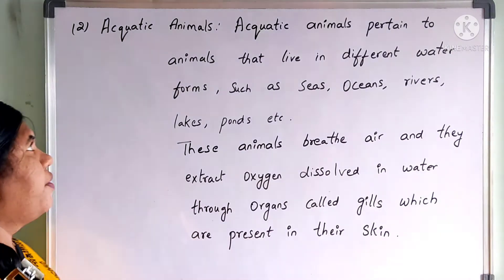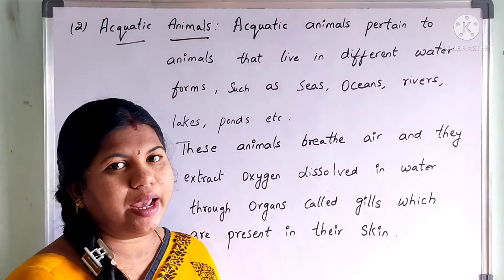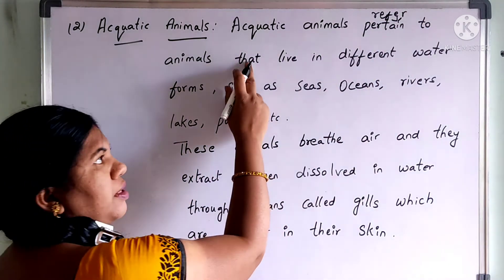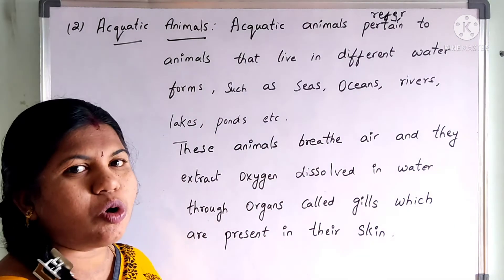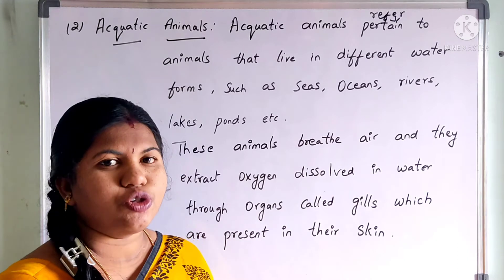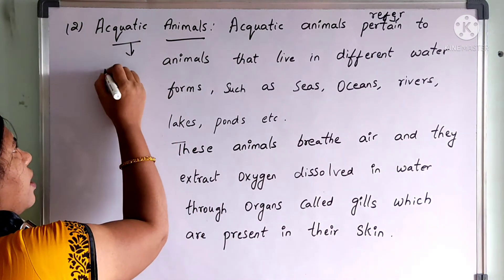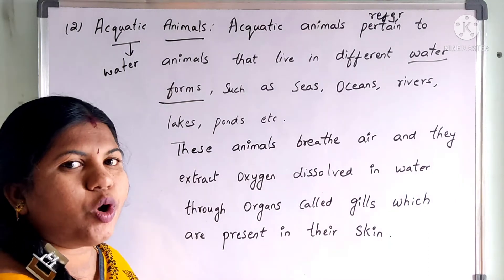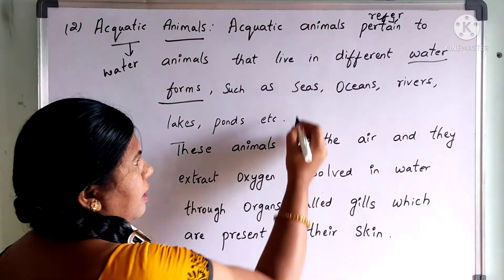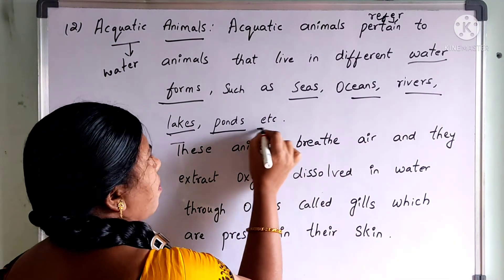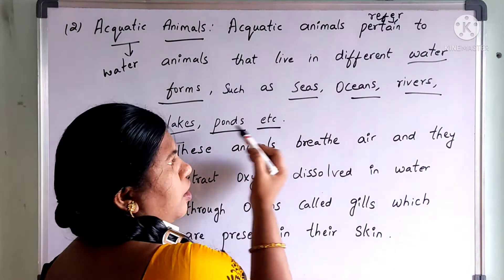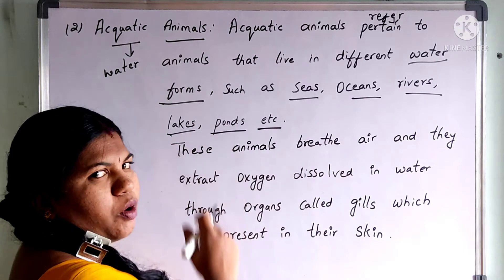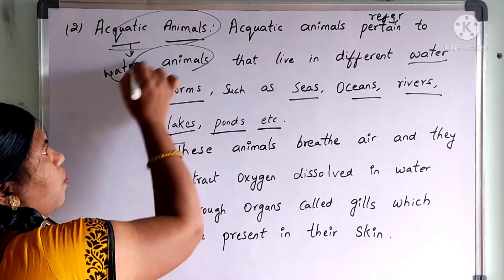Our second category is aquatic animals. Aquatic animals refer to animals that live in different water bodies. They are also called water animals because they live in different water sources such as seas, oceans, rivers, lakes, ponds, etc. Animals living in these water bodies are called aquatic animals.